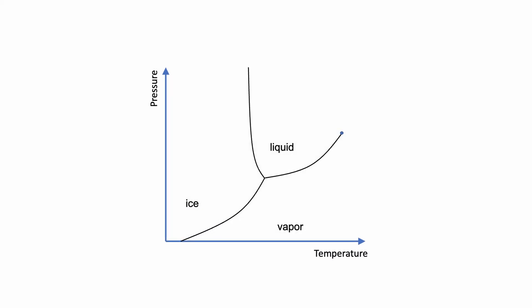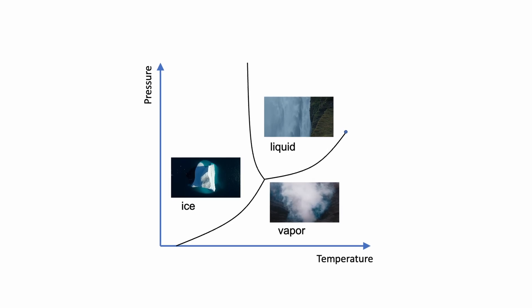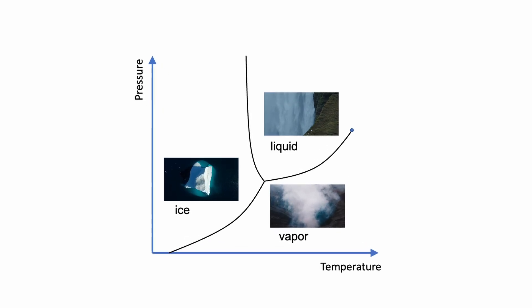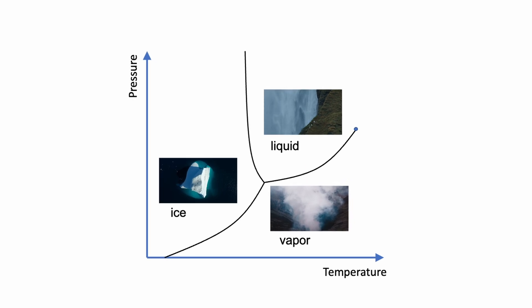It's similar for a superconductor. You can also change temperature and pressure — especially temperature. As you go down to low temperatures, you find the superconducting state. But there's not only one superconducting state; there are different phases that behave in completely different ways. So, superconductor is not equal to superconductor.